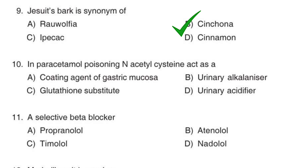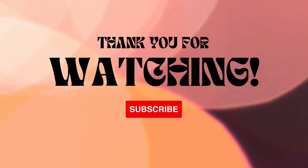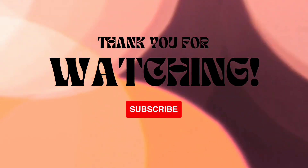Next question: in paracetamol poisoning, N-acetylcysteine acts as — Option A: coating agent of gastric mucosa, Option B: urinary alkalinizer, Option C: glutathione substitute, Option D: urinary acidifier. The right answer is Option C, glutathione substitute.